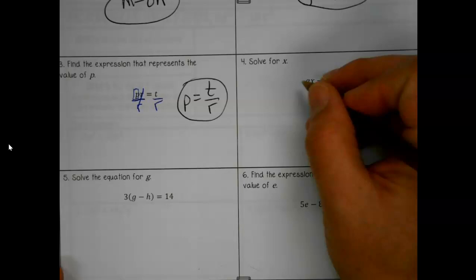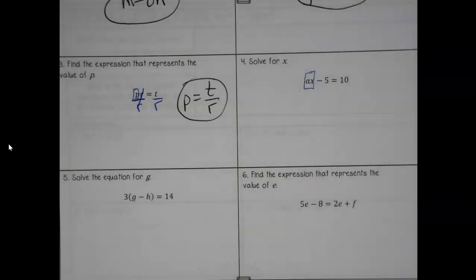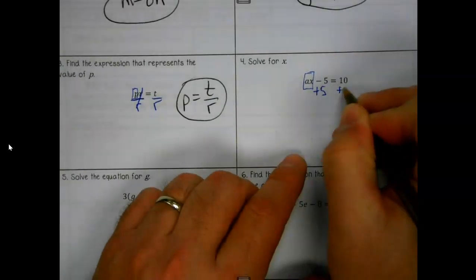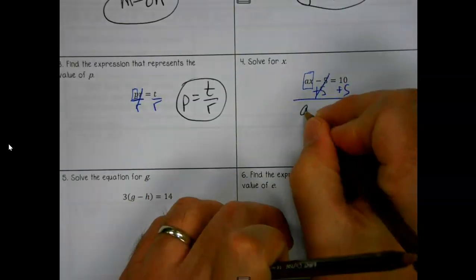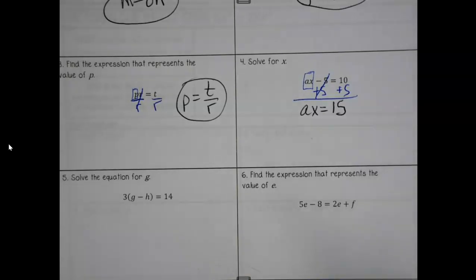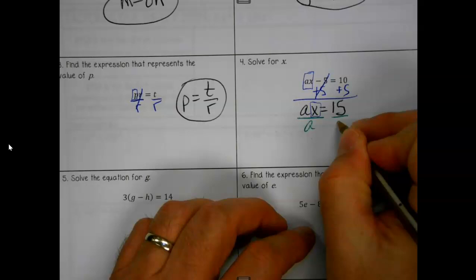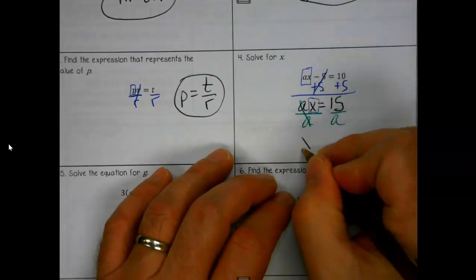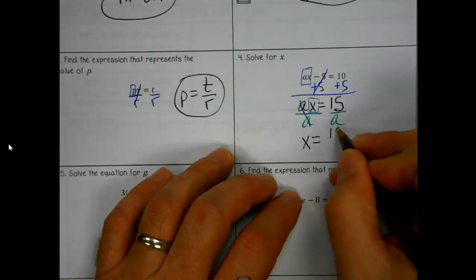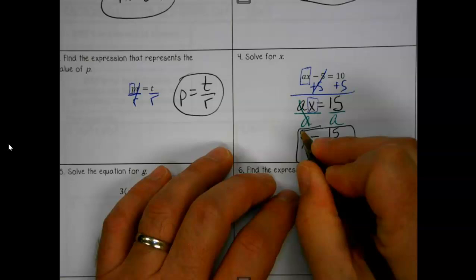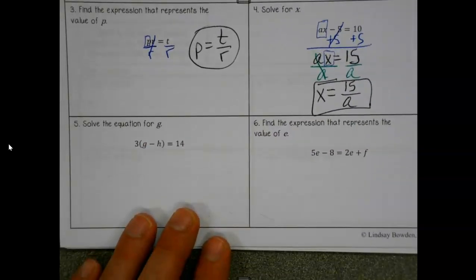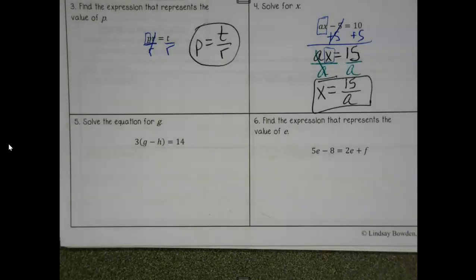All right, let's see if we can finish it off strong then. Solve for x. Now this time it's a little more interesting because I have to get ax alone before I can get x alone. We're gonna plus that. What's the last step? Divide by a. But even when we do make the mistakes, that's helping with learning, so we get those figured out now and we get better.